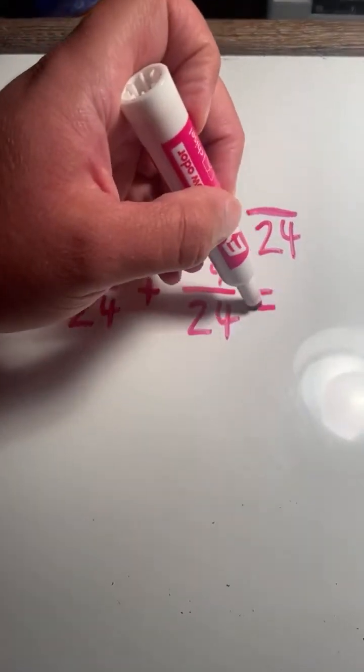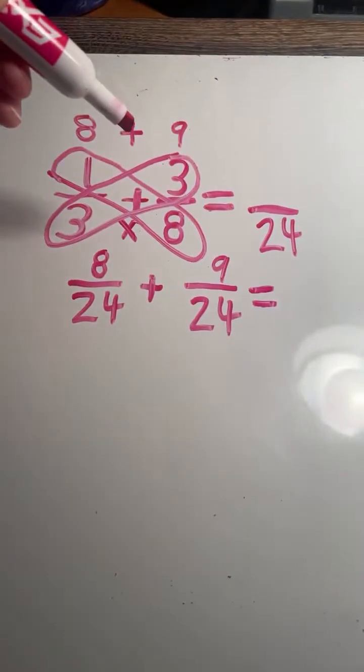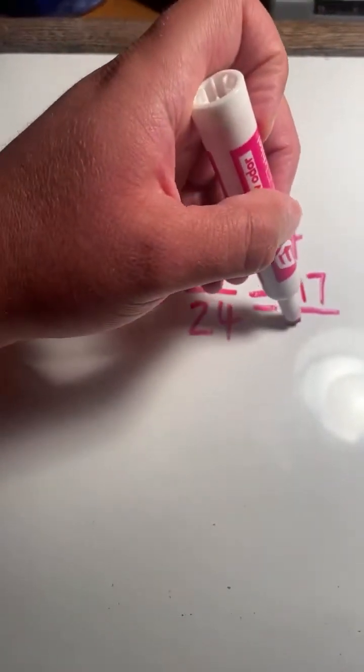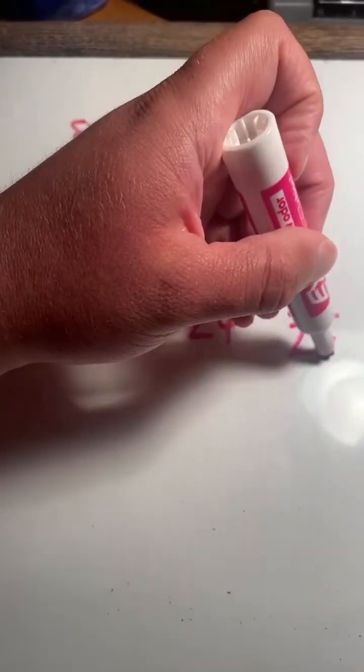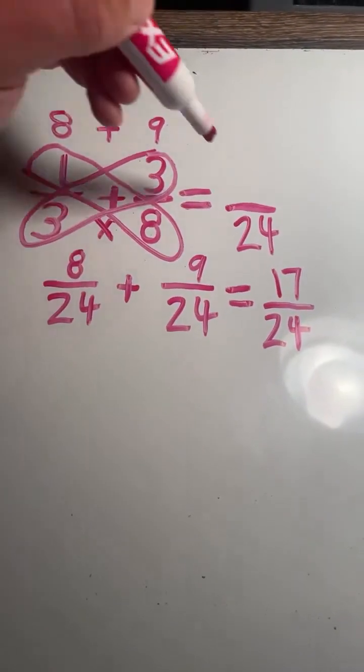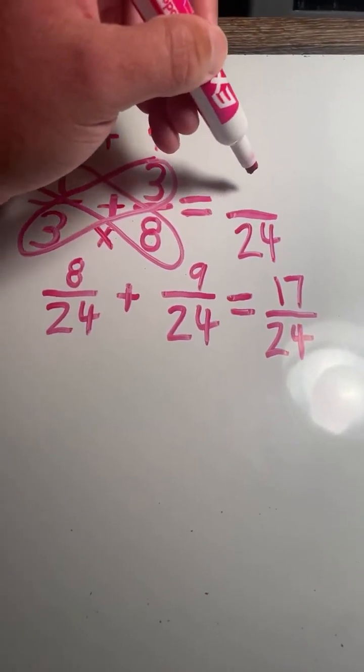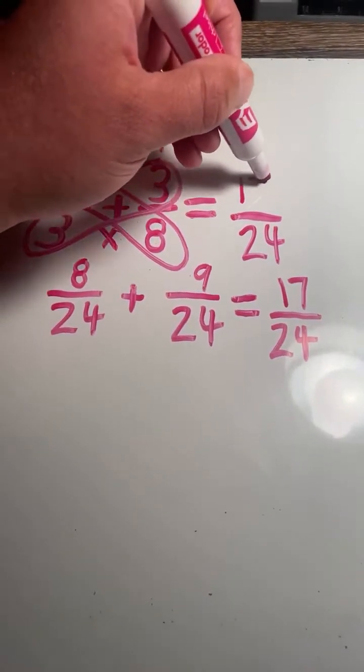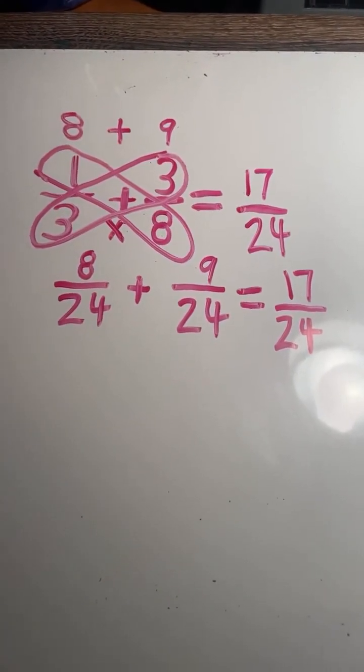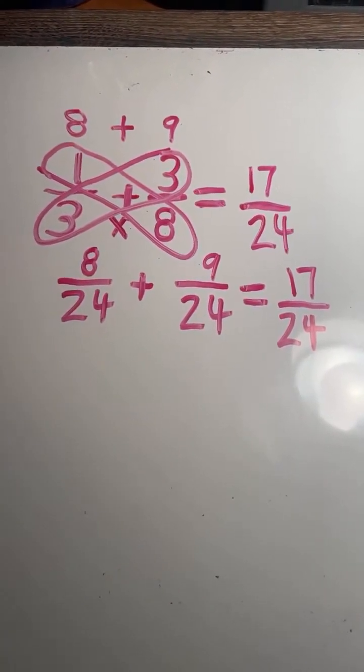Now we can add up our numerators. 8 plus 9 equals 17. Since we now have a common denominator, it will stay the same. 8/24 plus 9/24 equals 17/24. We have our final answer: 1/3 plus 3/8 equals 17/24.